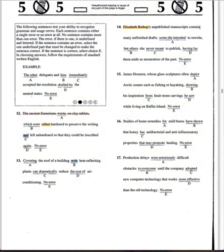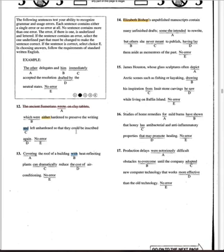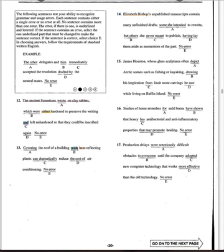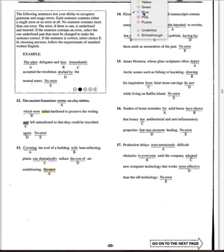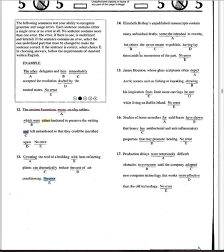Number 13: 'Elizabeth Bishop's published manuscripts contain many unfinished drafts — some she intended to be right, but others she never meant to publish, having laid...' Hmm, I don't think there should be an error here. Actually, you can cover the roof with plants — why not? So let's move on to 14.